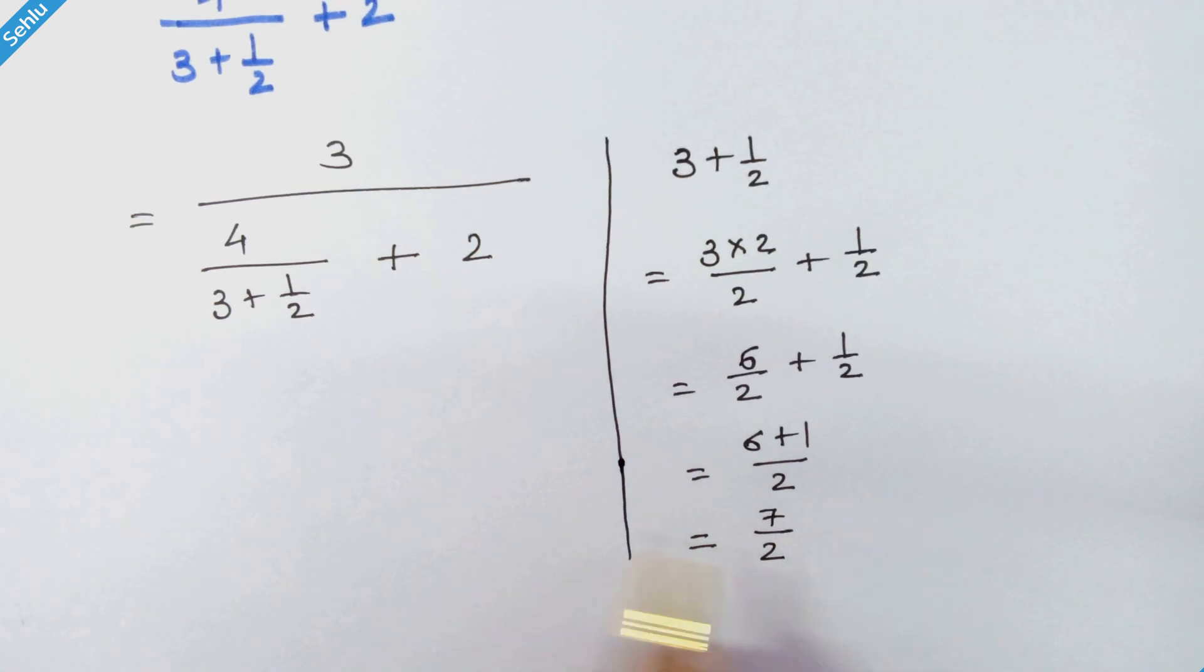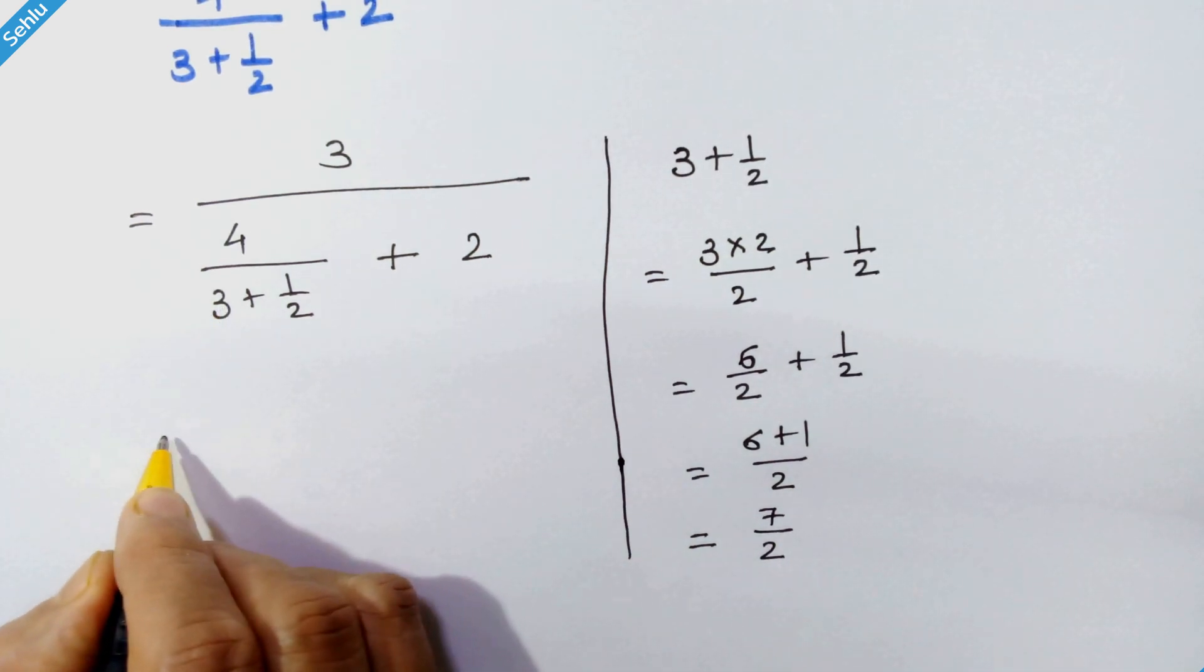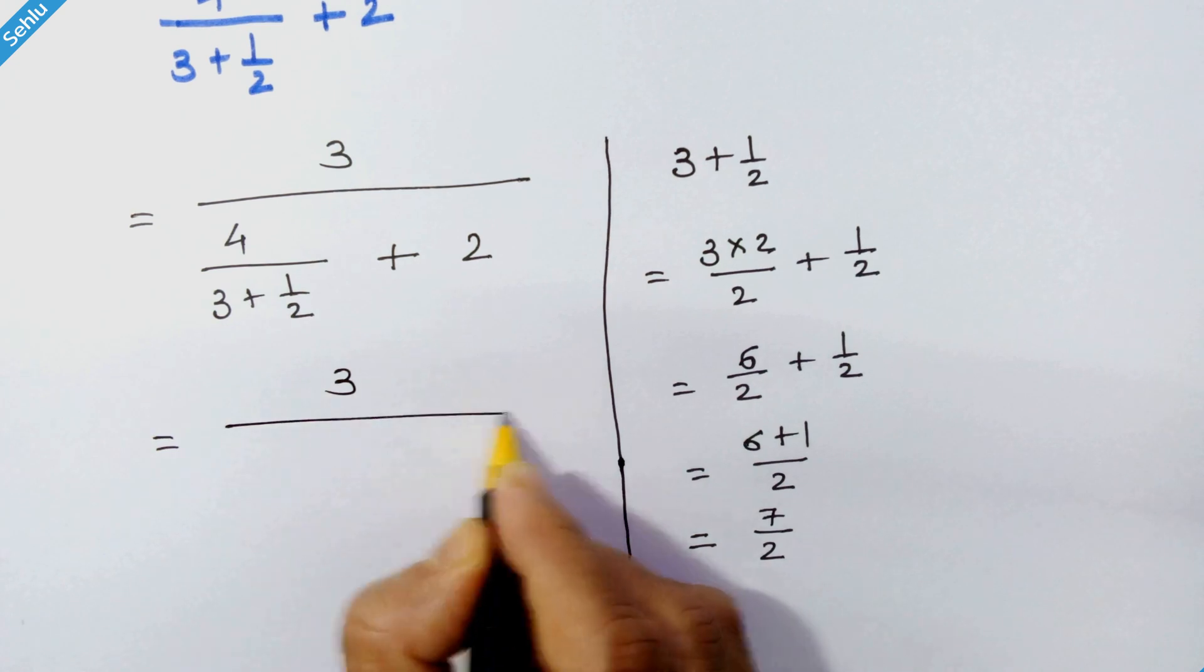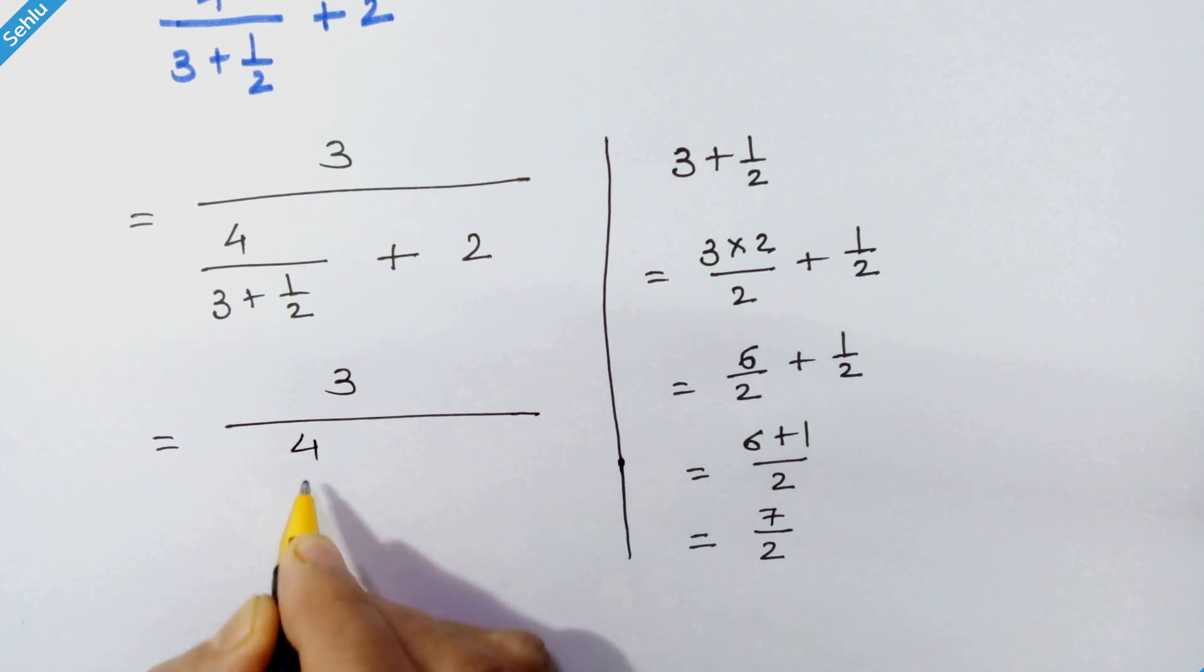Now let's write this in the main expression. So here we have 3 upon 4 upon 7 upon 2 plus 2. This 2 will multiply with this 4.